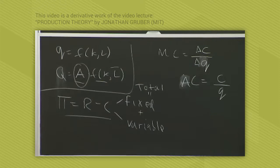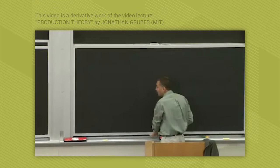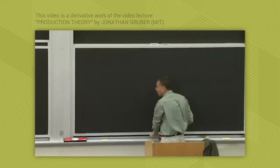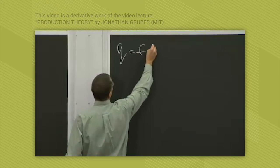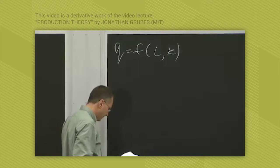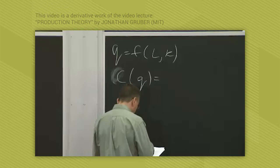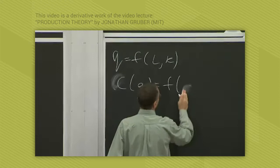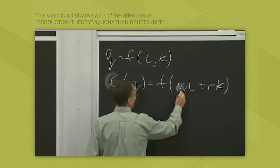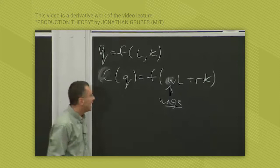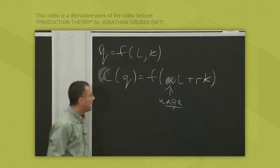So those are our key definitions. Now, with those in mind, let's ask, how do we get costs? And the answer is we get them from the production function. Once we know a production function, we can derive costs. So if we have some production function, Q equals F of L and K, then we can say that the cost of producing Q is equal to F of WL plus RK. Where W is the wage rate, or the rate you pay per unit of labor, and R is the rental rate, or the rate you pay per unit of capital.